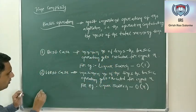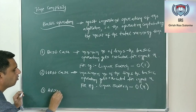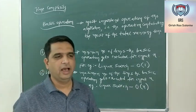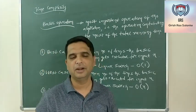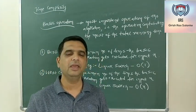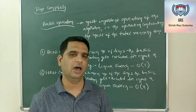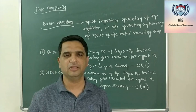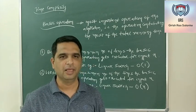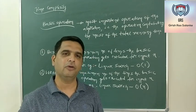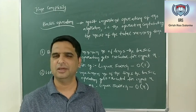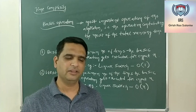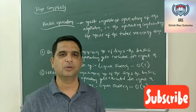The third one is the average case — that means the number of comparisons done is neither minimum nor maximum. When it falls in between, we call it the average case efficiency of the algorithm. This is about the time and space complexity of algorithms. In the next video, we will see how to find the time complexity of an algorithm on various code examples — we will take some sample codes and analyze their time complexity.